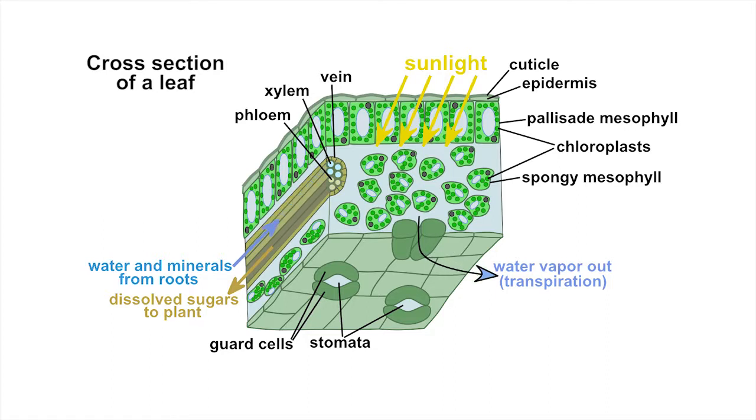The stomata also allow the exchange of other gases, letting in carbon dioxide so photosynthesis can take place and releasing the oxygen produced as a result of photosynthesis into the atmosphere.